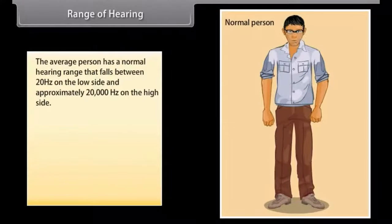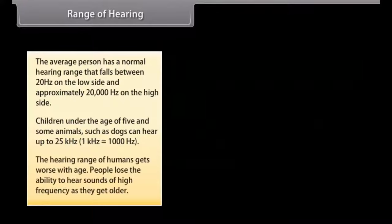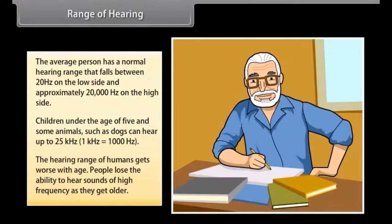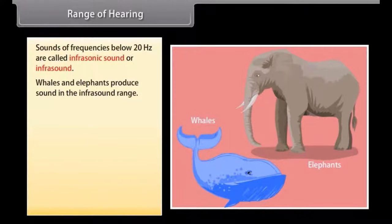Range of hearing. The average person has a normal hearing range that falls between 20 hertz on the low side and approximately 20,000 hertz on the high side. Children under the age of 5 and some animals such as dogs can hear up to 25 kilohertz. The hearing range of humans gets worse with age. People lose the ability to hear sounds of high frequency as they grow older.